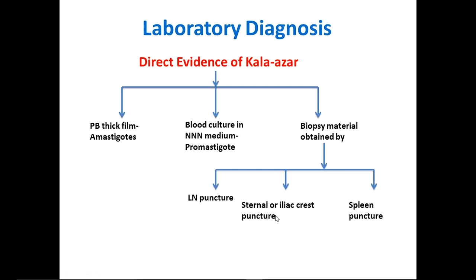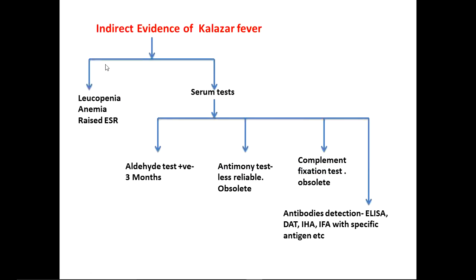Bone marrow biopsy is a safer procedure with minimized hemorrhage risk, though it is more painful; one disadvantage is that parasites may be scanty in the aspirate, potentially giving a false negative. For indirect evidence, blood counts show decreased WBC and hemoglobin with raised ESR. Serum tests include the aldehyde test, anti-leishmanial and complement fixation tests (now obsolete), and antibody detection tests like ELISA, immunofluorescent, and indirect hemagglutination tests.